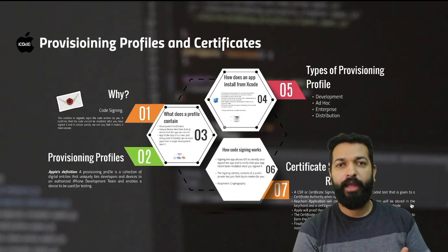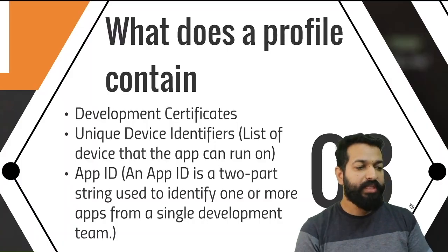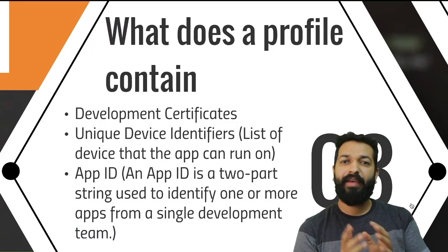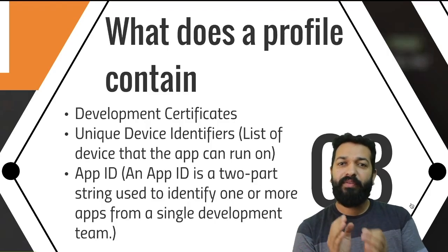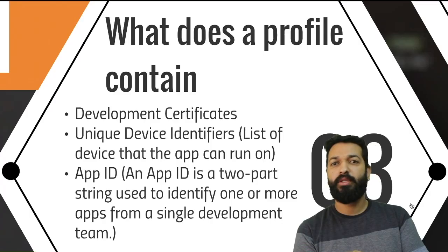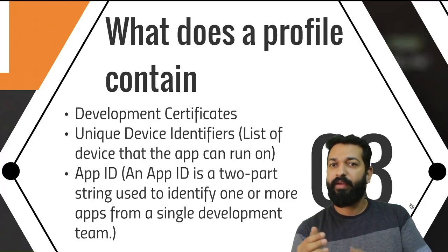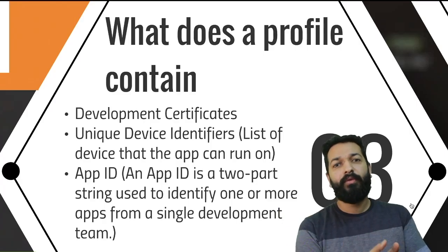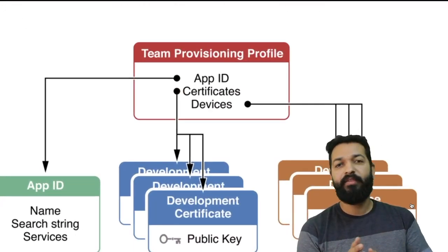Now that we have an understanding of what a provisioning profile is, let's see what it contains. A provisioning profile contains three things: development certificates, unique device identifiers, and the app ID. The development certificates authorize the test devices we want to run our app on. The unique device identifiers let iOS know if this is the designated device on which the app should run. The app ID helps identify whether this particular application is authorized to run on this device. The app ID is a two-part string containing the team ID followed by the bundle identifier. If the app ID in our provisioning profile contains the bundle identifier of the application we are trying to run and the two bundle IDs match, it will allow installation; otherwise the installation will fail.